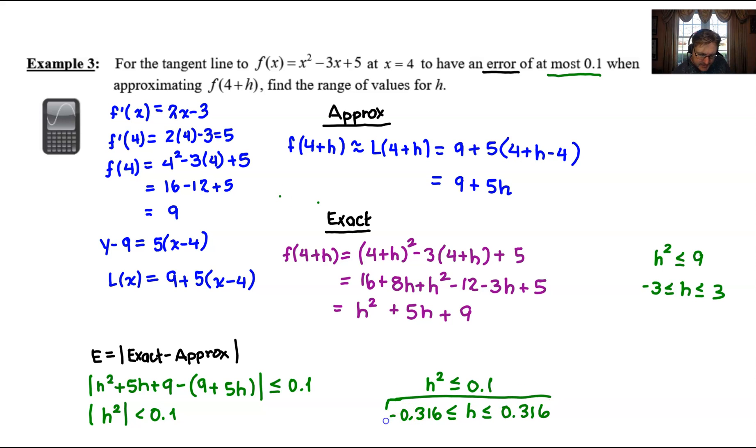You've found the value of h that makes the error at most 0.1. Now, if this was some kind of a numeric value, basically what you're doing is if you wanted to approximate something by using the tangent line, you're safe using anything from 4.316 back to, oh, you guys are going to make me do this. 3.684, I believe, would be the range of values that you could plug in for this x, compute through the approximation, and have an error that's at most 0.1.